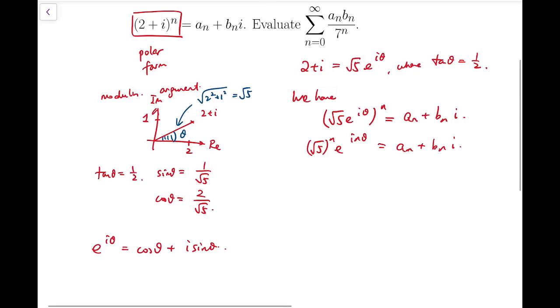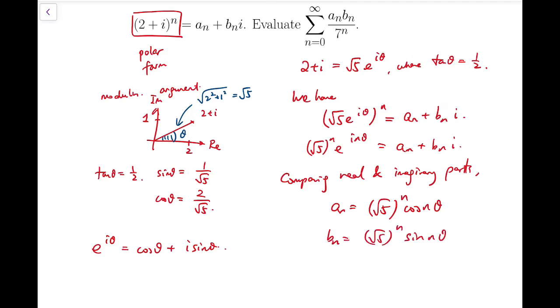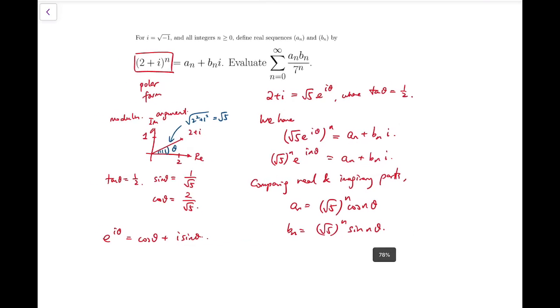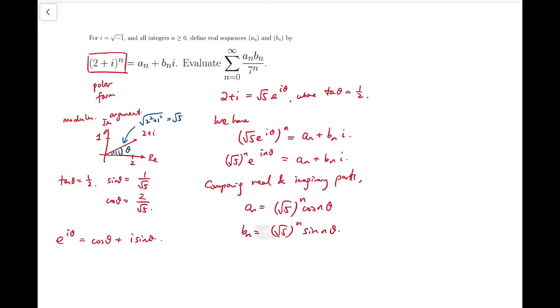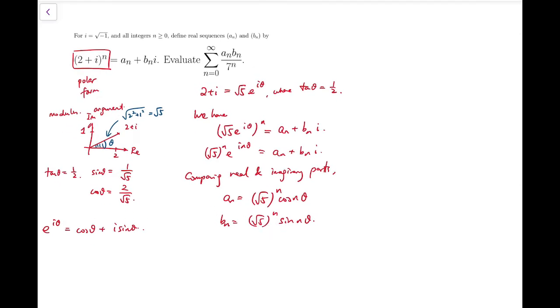By comparing real and imaginary parts, a_n = (√5)^n·cos(nθ) and b_n = (√5)^n·sin(nθ). We've successfully written a_n and b_n in condensed form, so we can now turn to evaluate that sum.